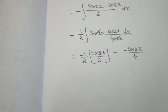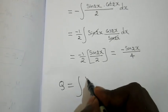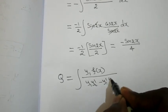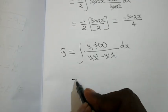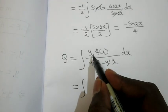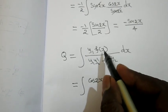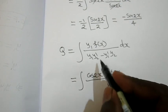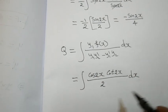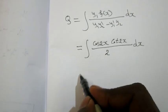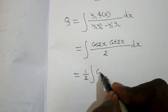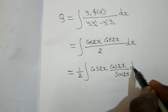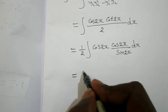Next, Q = ∫[y1·f(x) / (y1·y2' - y1'·y2)] dx. Substituting: Q = ∫[cos 2x · cot 2x / 2] dx = 1/2 · ∫cos 2x · (cos 2x / sin 2x) dx = 1/2 · ∫cos²2x / sin 2x dx.